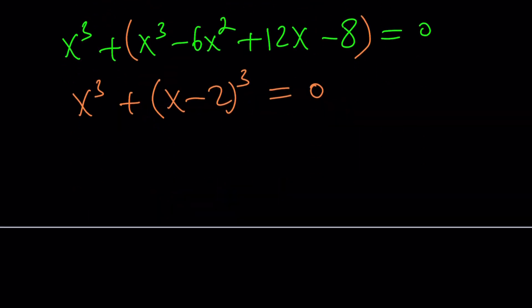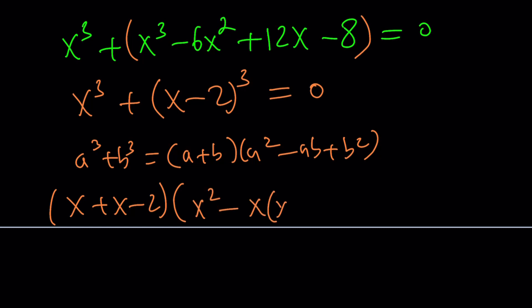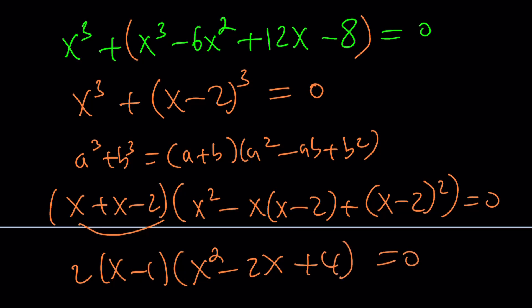Remember the formula for a cubed plus b cubed. It's a plus b times a squared minus ab plus b squared. If you use that, you're going to get x plus x minus 2, multiply by, that's the a plus b factor. And then x squared minus x times x minus 2 plus x minus 2 squared equals 0. From here, you're going to get 2x minus 2, which is 2 times x minus 1. And this should give you, x squared cancels out, but you get another x squared from here, minus 4x plus 2x, minus 4x plus 2x. That's going to be a minus 2x. And then you get a plus 4 from here, right?